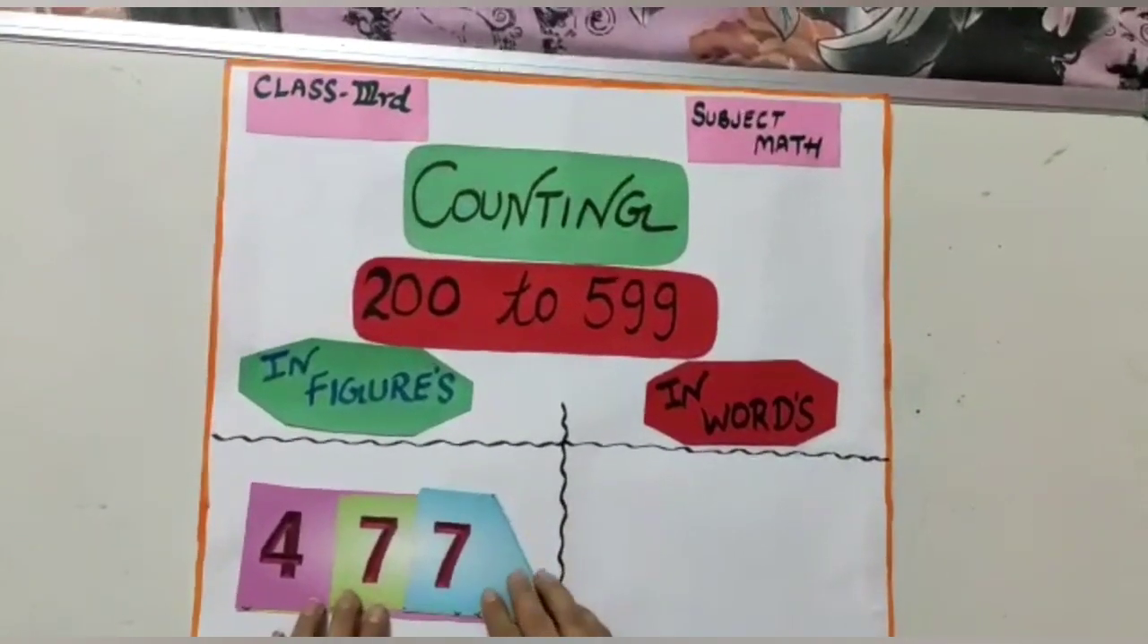Next number is four hundred seventy-seven. Four hundred seventy-seven. See, in the word, four hundred seventy-seven.